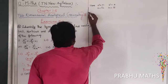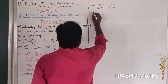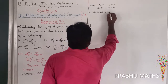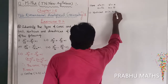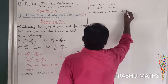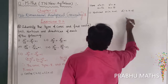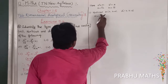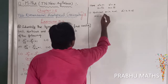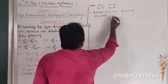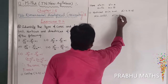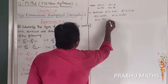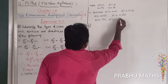Second, find the vertices. The vertices formula: A is (h, k + a) and A' is (h, k - a). Substituting h = 0, k = 0, and a = √10: vertex A is (0, 0 + √10) = (0, √10), and vertex A' is (0, 0 - √10) = (0, -√10).